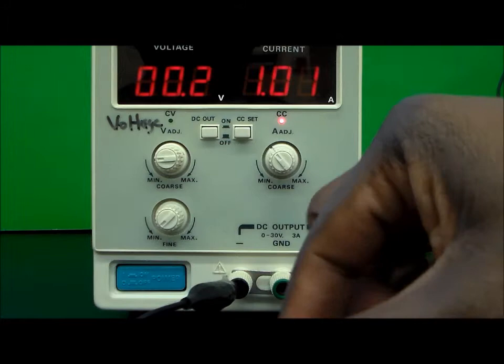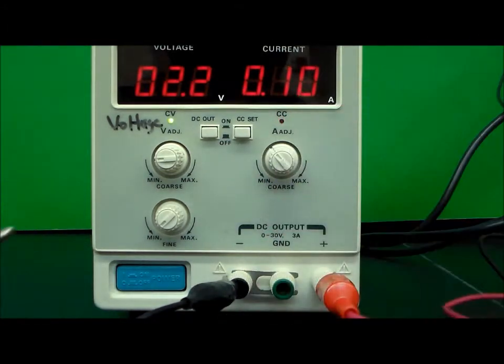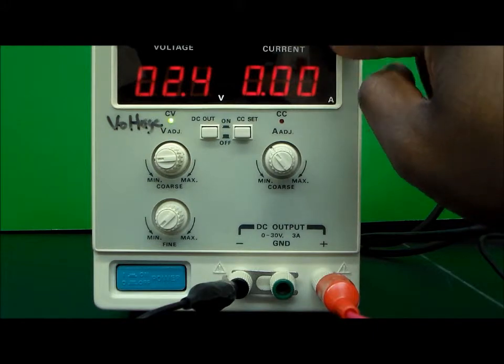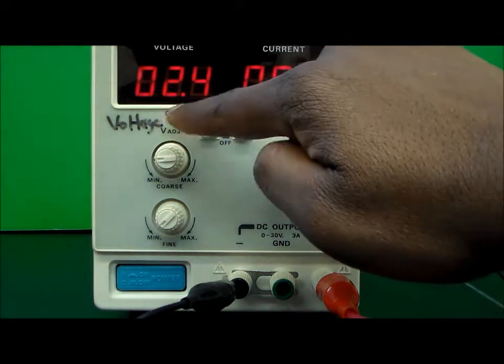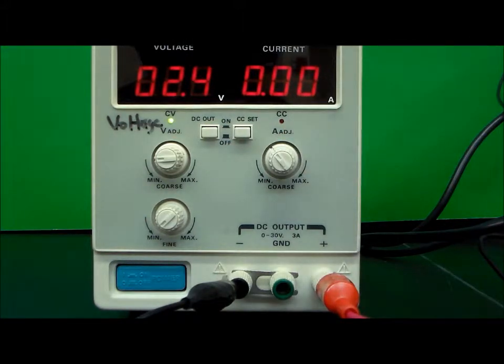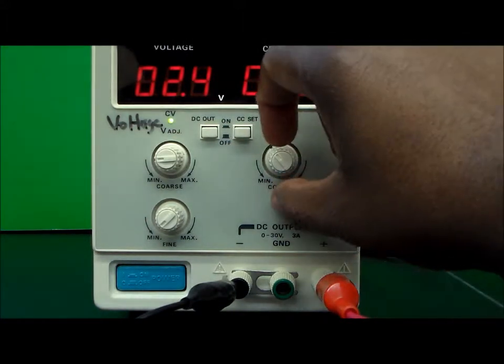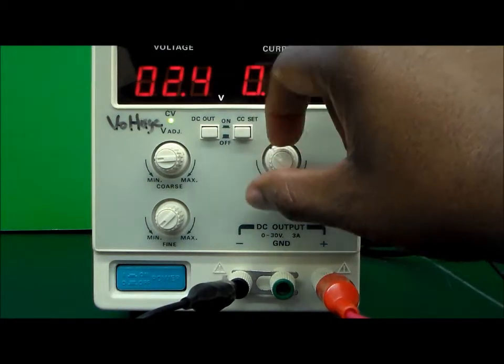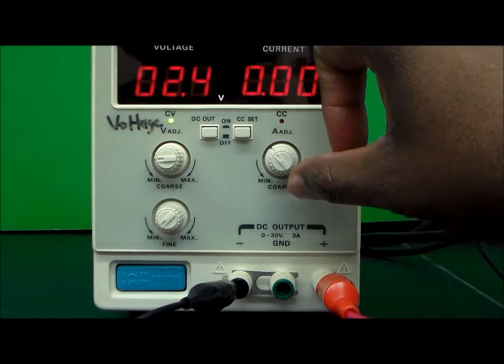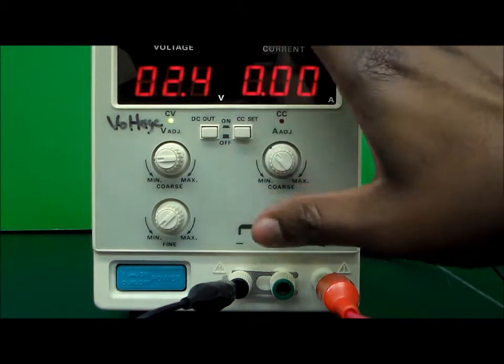So that is a demonstration as to how to go about using the PROTEC 3003B power supply in order to get both constant voltage and constant current. By the way, you cannot get both at the same time. You're either going to get constant voltage or constant current if you're changing the knobs. That's how you go about setting the power supply up in order to get either constant voltage or constant current out of the power supply.